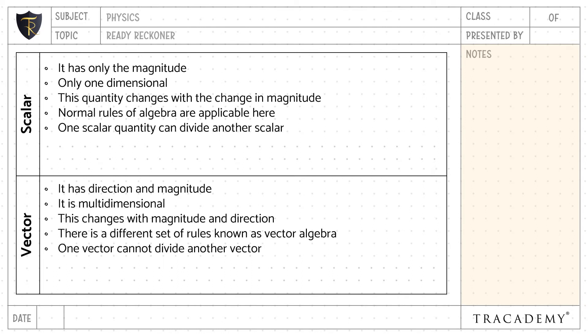Examples of scalar quantities include speed and time, where the distance between the points is a scalar quantity and it's not the direction.